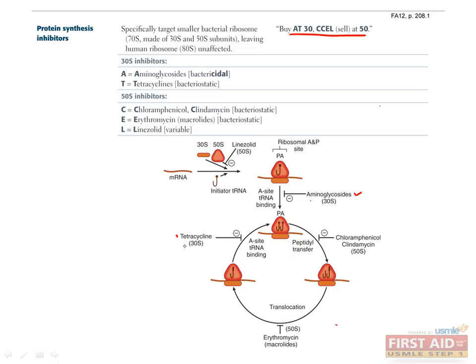Aminoglycosides and tetracyclines both inhibit the 30S ribosome, while inhibitors of the 50S are chloramphenicol, clindamycin, erythromycin, and linezolid. Linezolid prevents the initiation step of protein synthesis, whereas most of the other antibiotics that inhibit protein synthesis inhibit elongation.